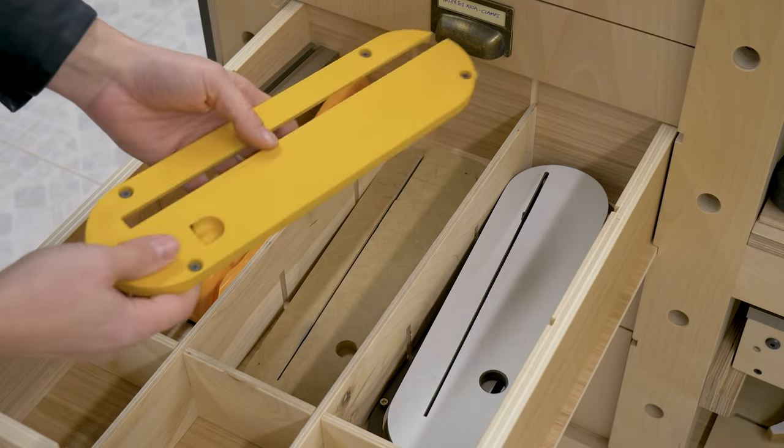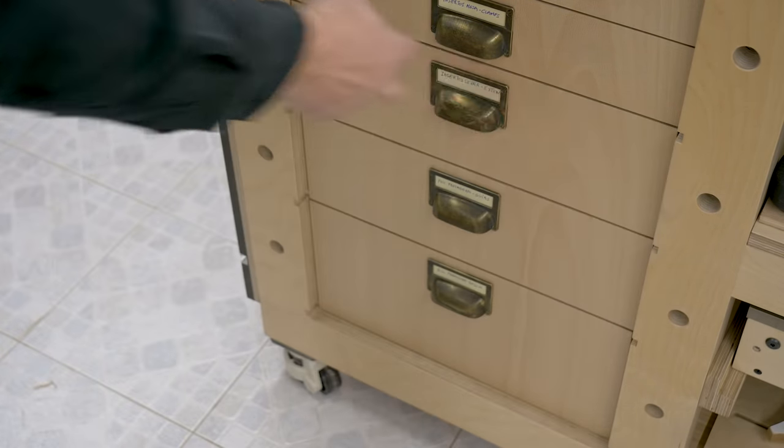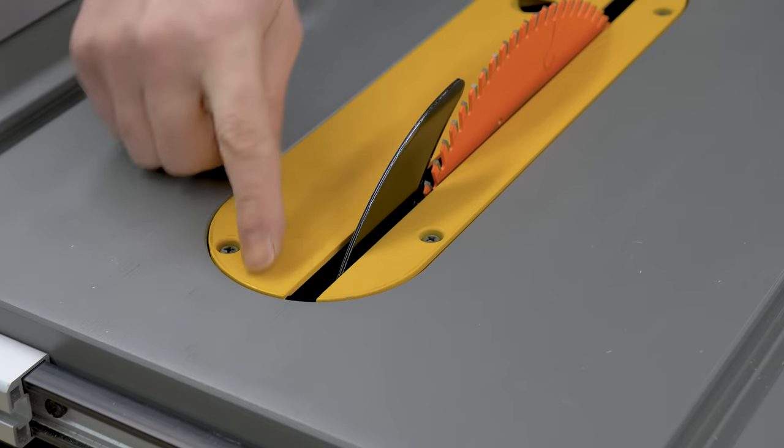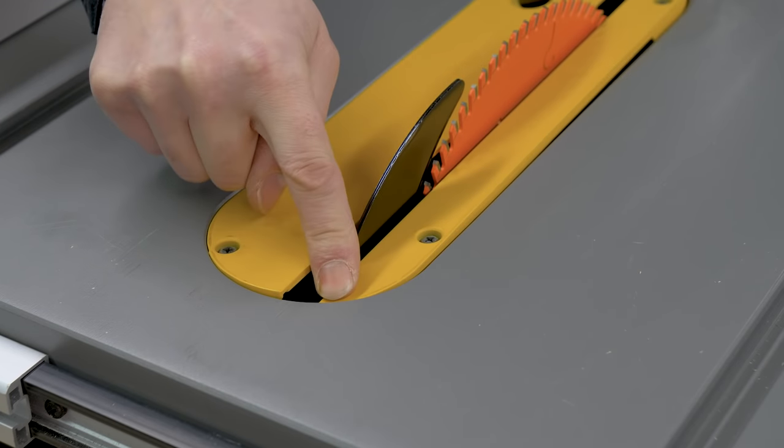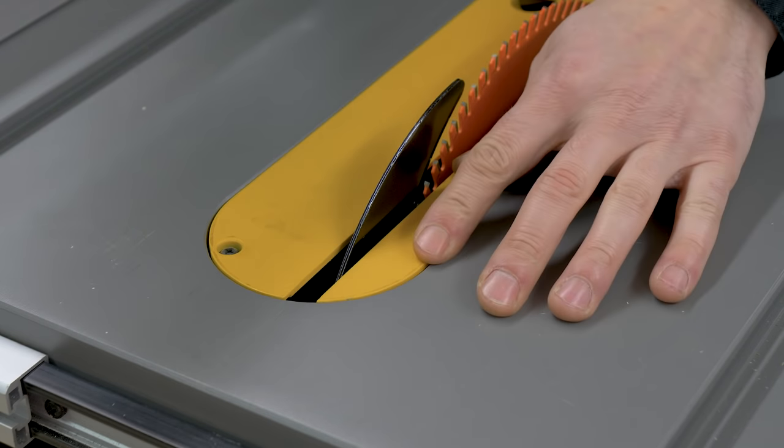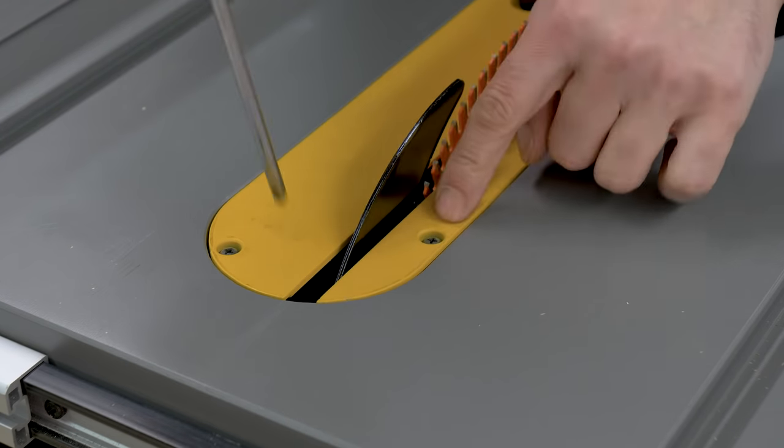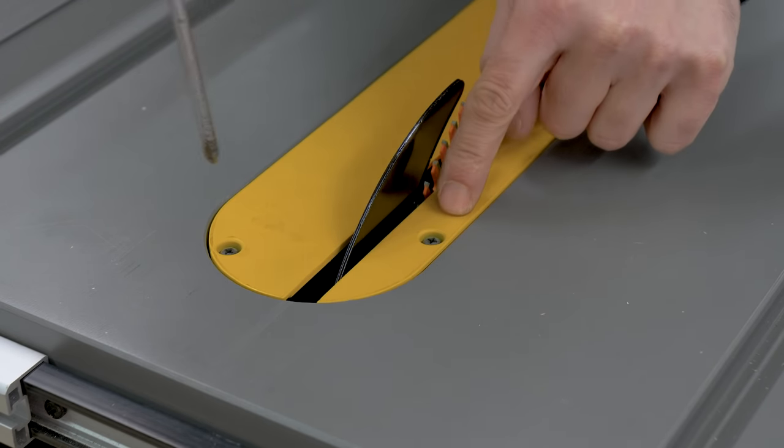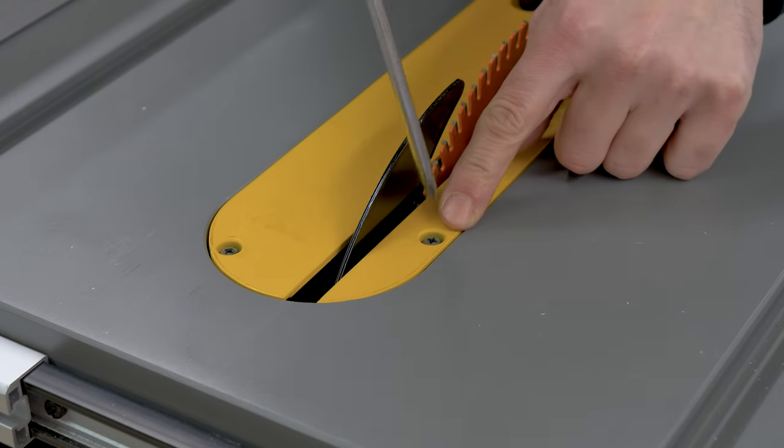This is the table saw's factory installed insert made in aluminum. The main problem with this insert is the cut in the back that lets us use a riving knife. It makes the insert very unstable and difficult to leave it even with the rest of the work table. Here we can see that it seems as if both parts of the insert were independent and didn't belong to the same part.